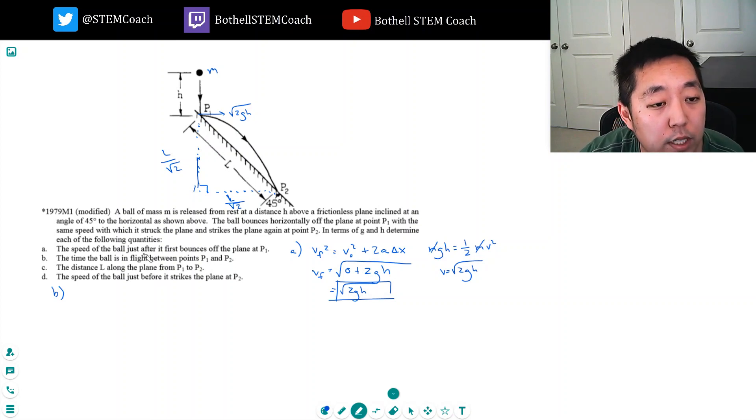So the time that it's in flight, so this is sort of the delta y and delta x, the horizontal distance.